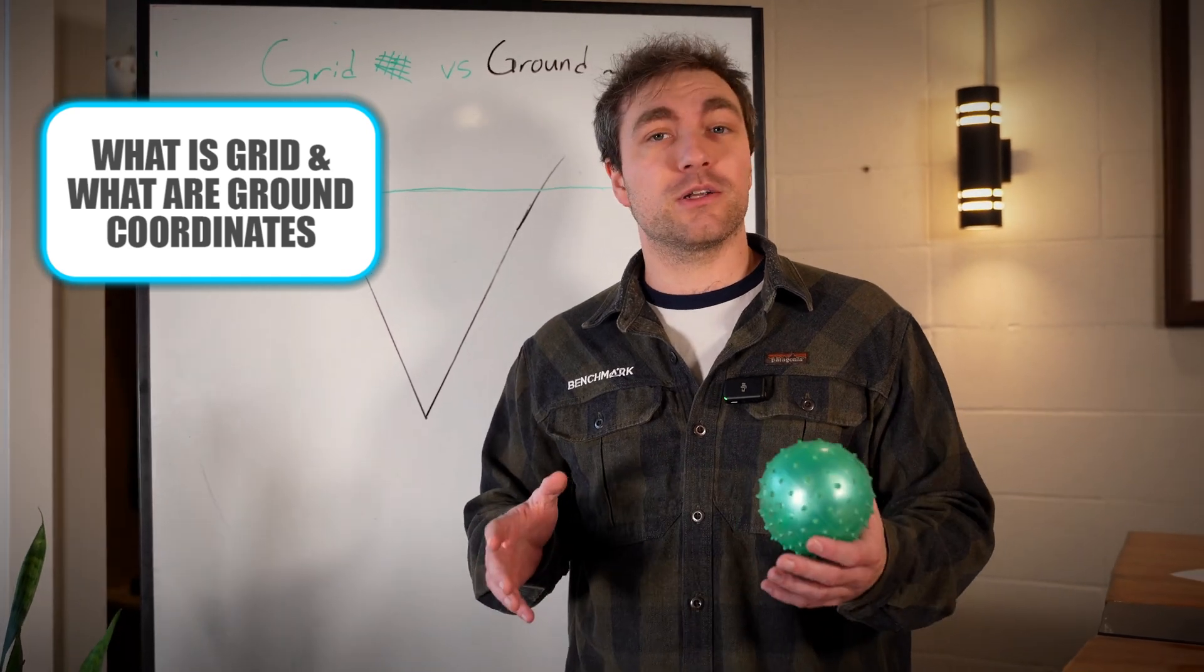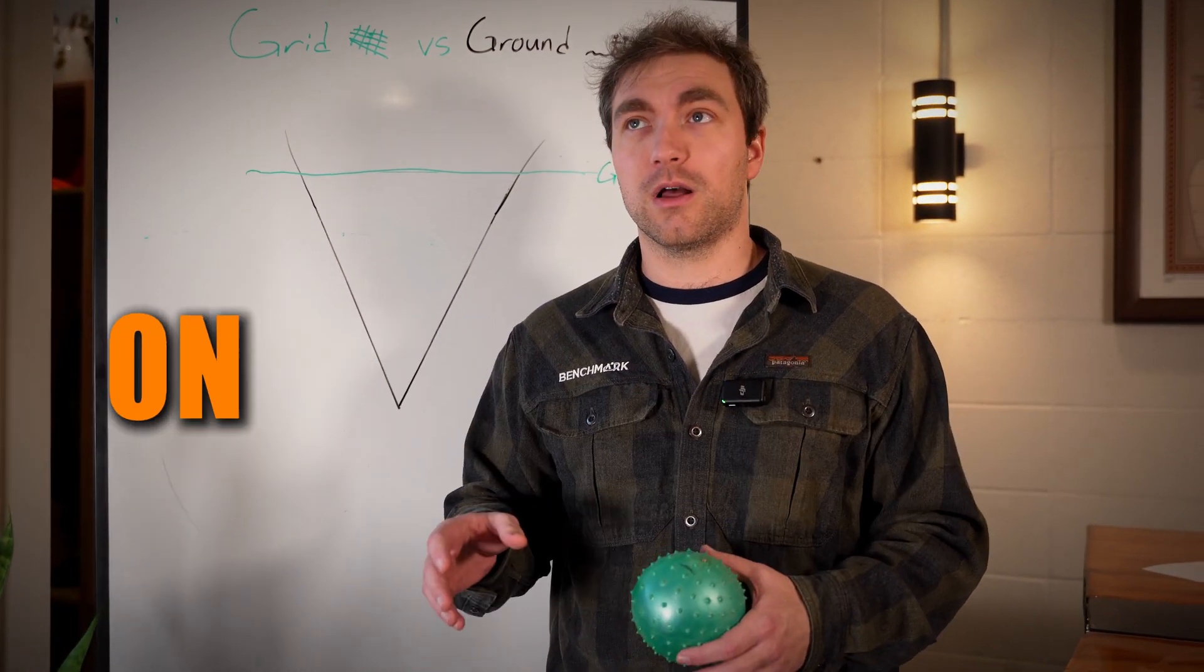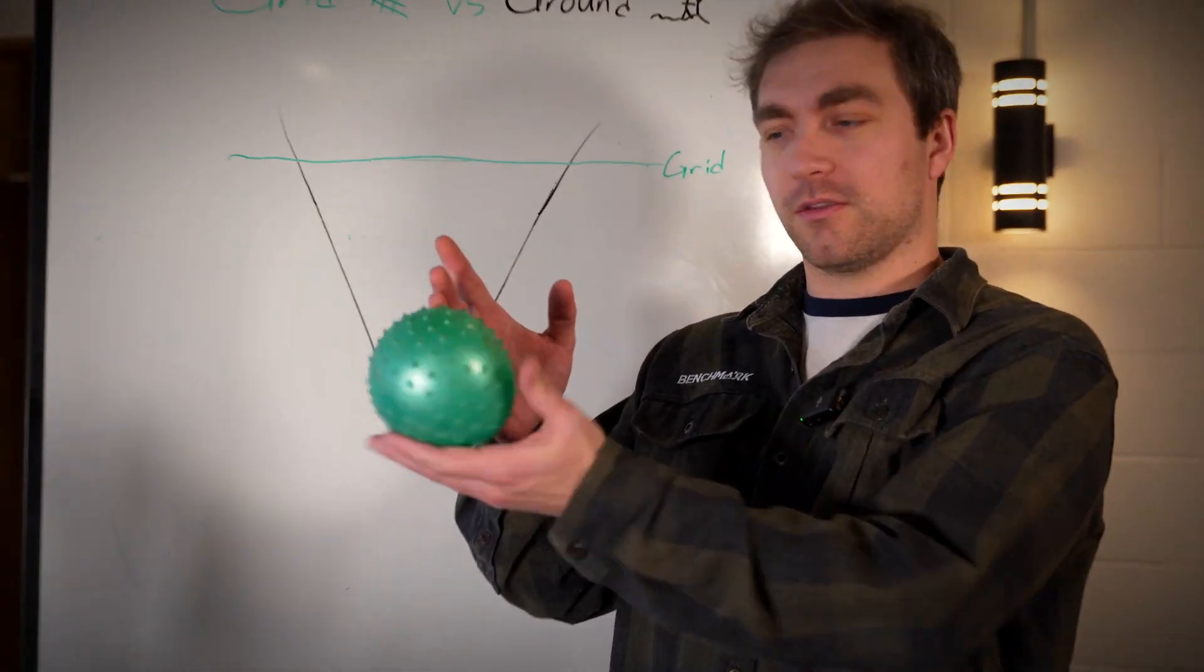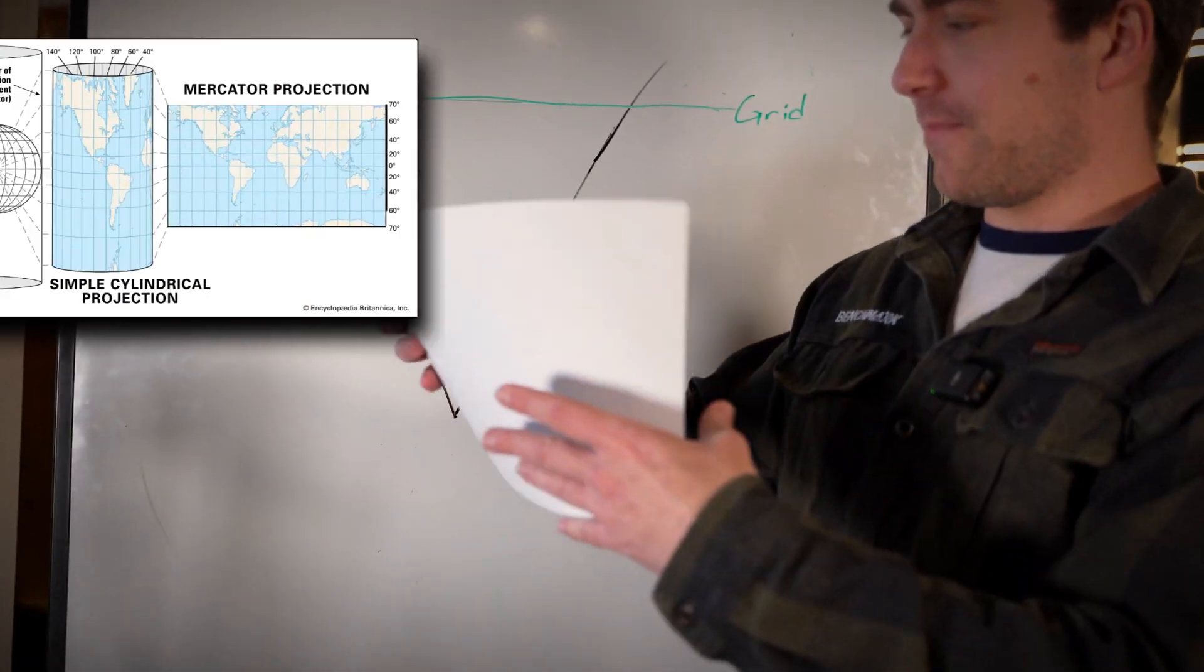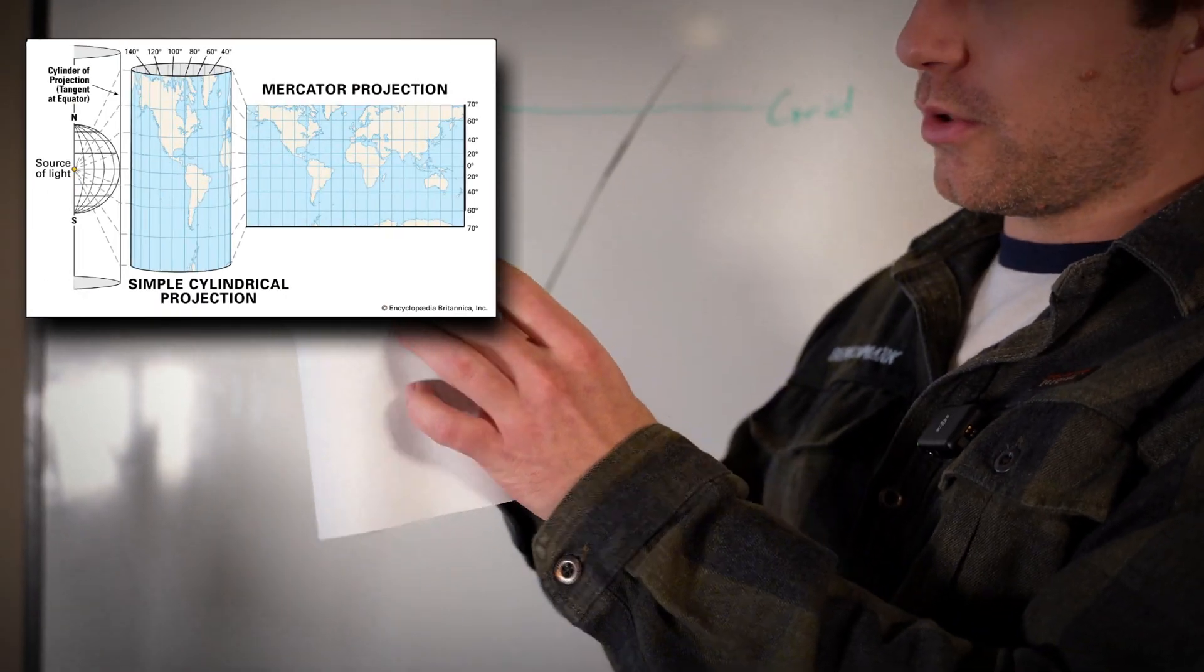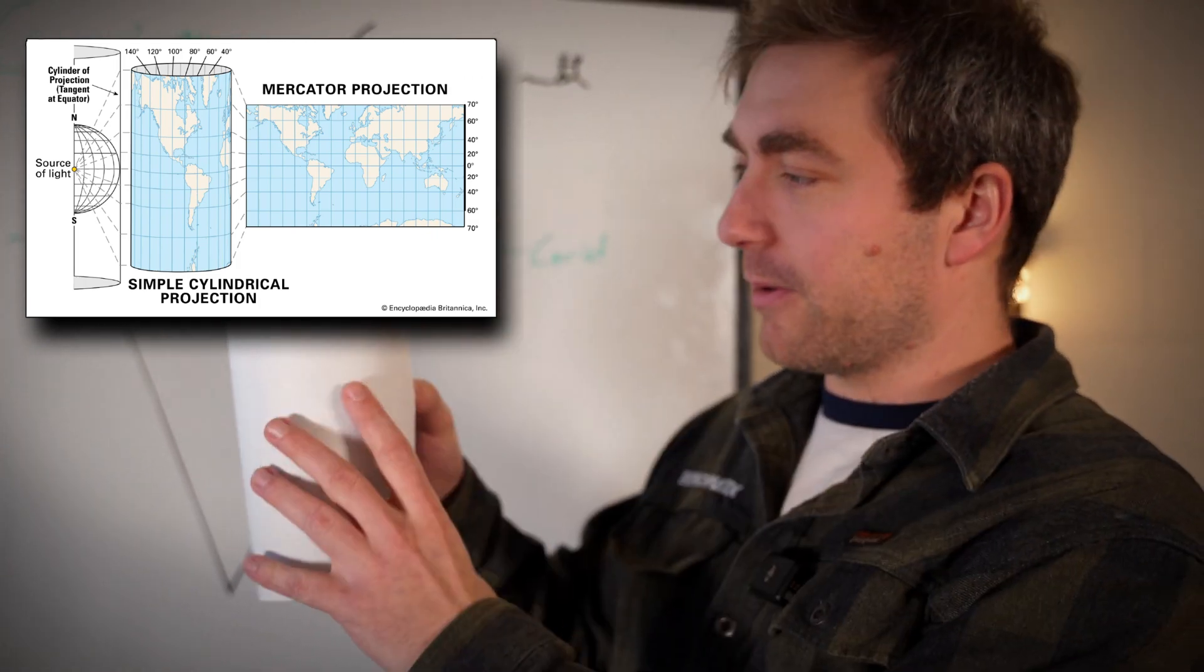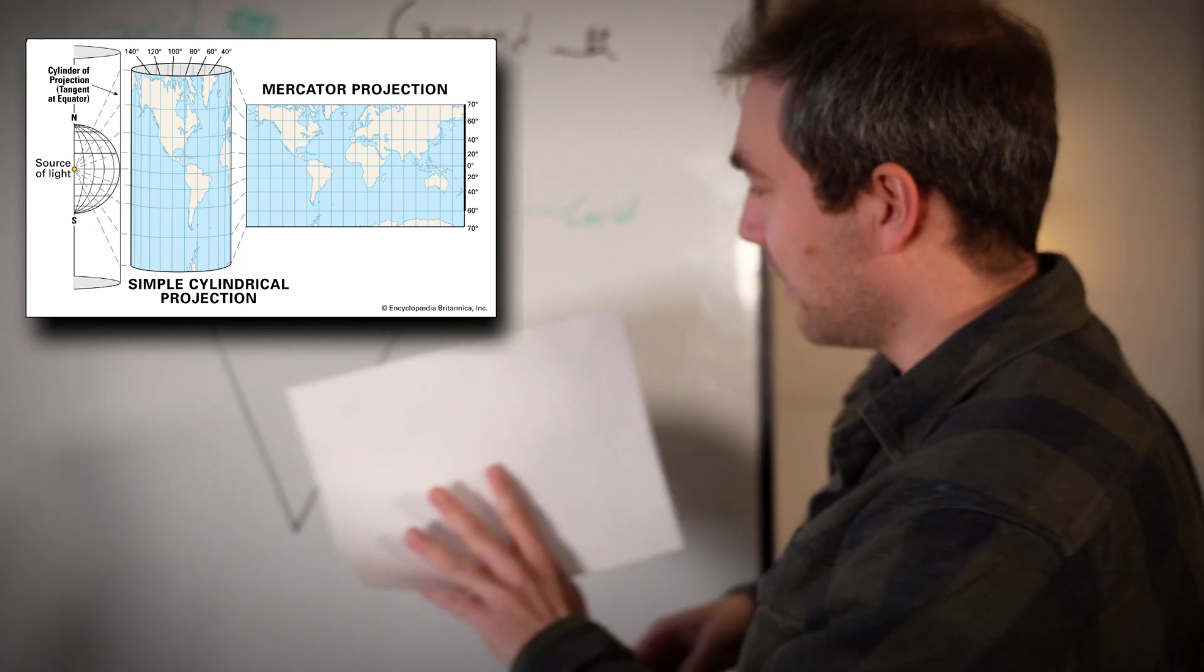So a grid position or a grid coordinate is your coordinate on a map projection. What a map projection is: if this is my earth, this little ball we have, we take a paper and wrap it around the earth. We put a little light inside the ball and it projects out onto this paper. We unfold it and here's our map.